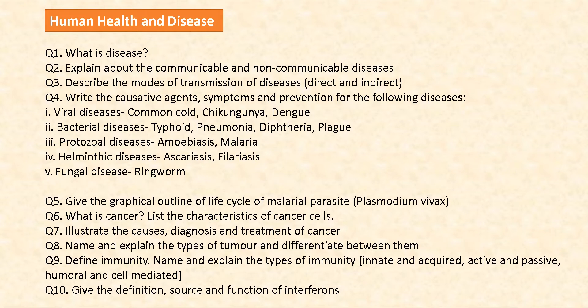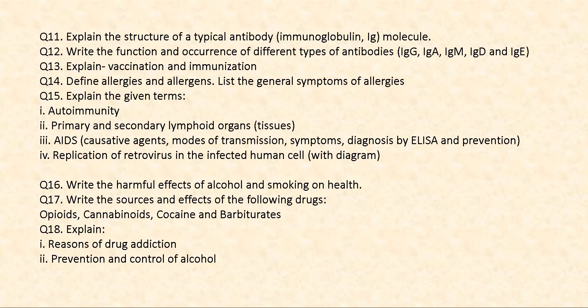Define immunity. Name and explain the types of immunity — mainly innate and acquired immunity, active and passive immunity, and humoral and cell-mediated immunity. Then read about the definition, source, and function of interferons. Study the structure of a typical antibody — its diagram and explanation — also called Ig or immunoglobulin molecule. Learn the function and occurrence of different kinds of antibodies: IgG, IgA, IgM, IgD, and IgE.